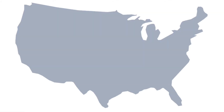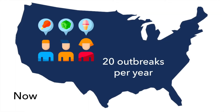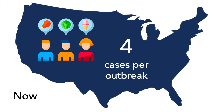Today, with whole genome sequencing, we are detecting 20 times more outbreaks of listeria, but the outbreaks are smaller with an average size of four cases. With fewer patients, it is harder to draw conclusions from interviews and pin down a common food source that might be responsible for an outbreak.